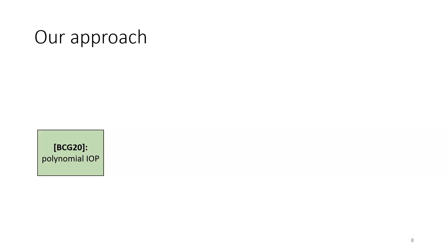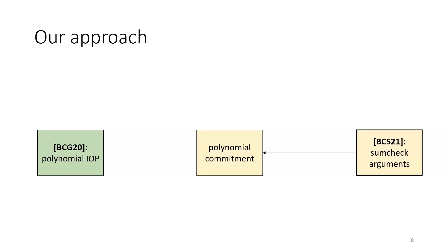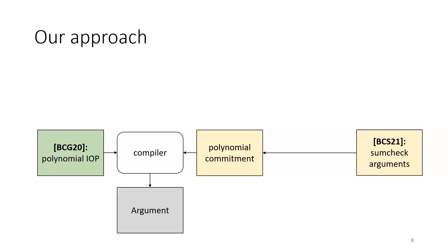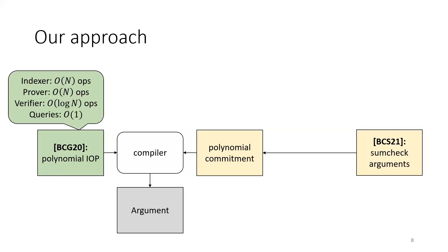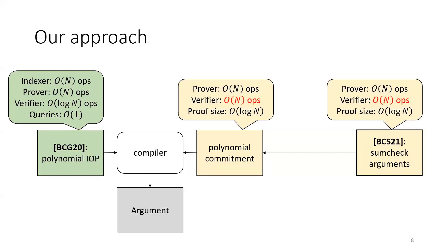Our construction method is to start with an information-theoretic protocol called a polynomial IOP, then take polynomial commitment schemes built from prior work BCS21 called sum-check arguments. Whenever you have a polynomial IOP and a polynomial commitment scheme, you can combine them using a compiler and it produces a new argument system. The polynomial IOP we use is quite efficient with good verification complexity.